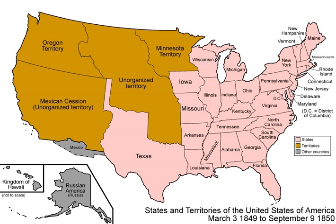Proposals in 1846–1850 on the division of the Southwest included the following: The Wilmot Proviso banning slavery in any new territory to be acquired from Mexico, not including Texas, which had been annexed the previous year. It passed the House in August 1846 and February 1847 but not the Senate. Later, an effort failed to attach the proviso to the Treaty of Guadalupe Hidalgo.